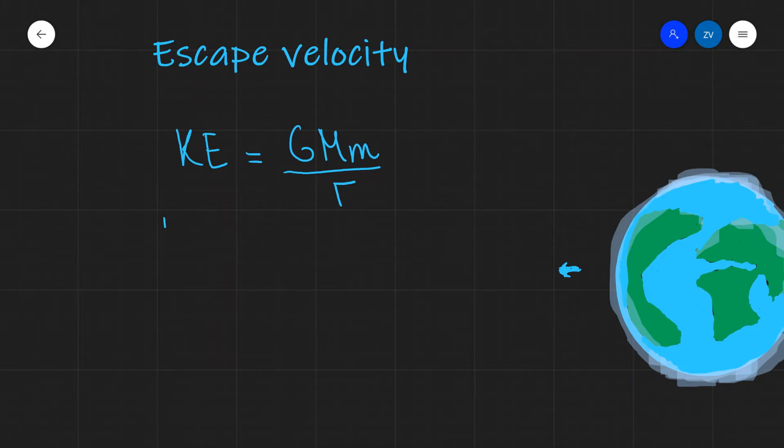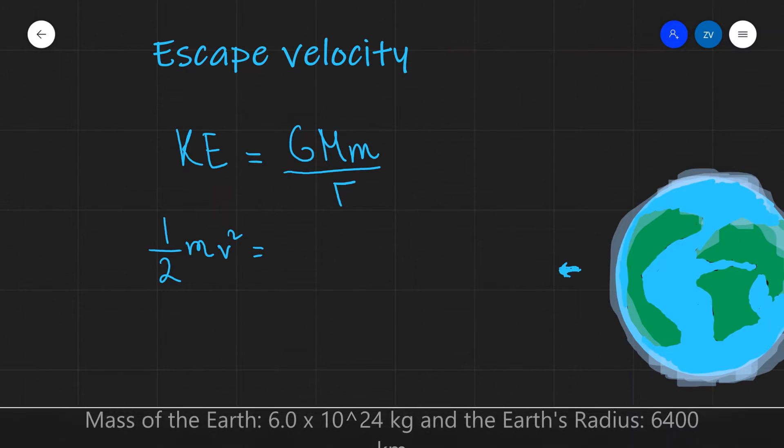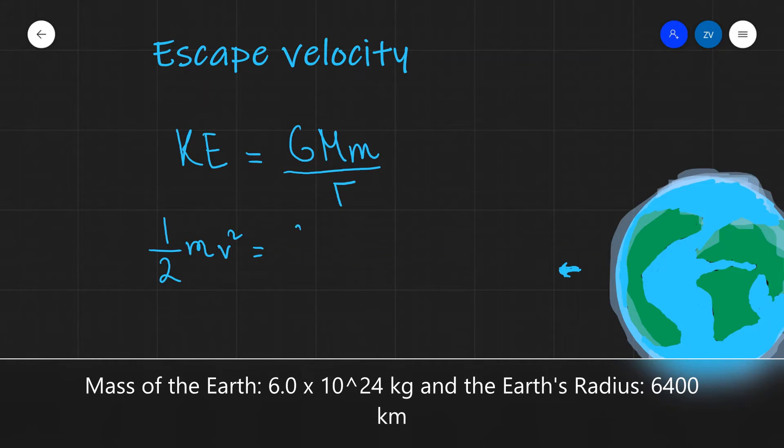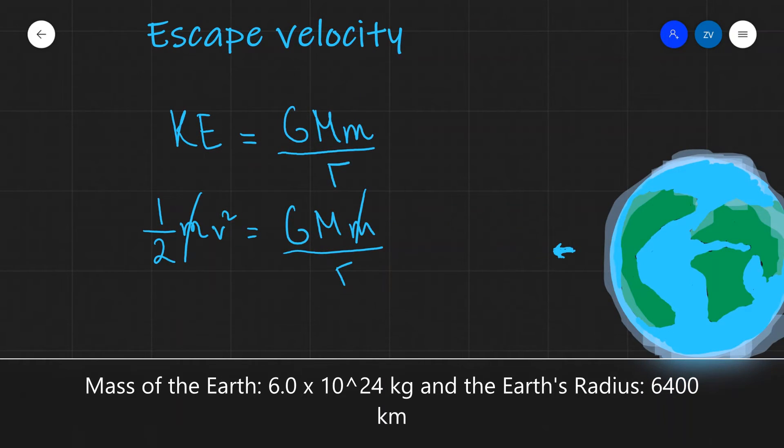Our formula for kinetic energy is ½mv², and this equals the magnitude of our potential energy, GMm/r. Notice that the mass of the rocket cancels out, so the escape velocity is independent of the mass of the object trying to escape.